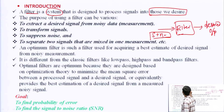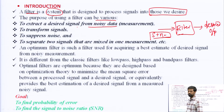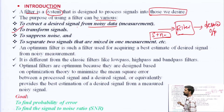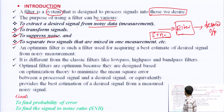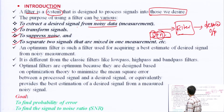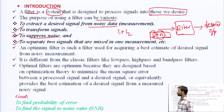The purpose of using a filter can be various: to extract a desired signal from noisy data — that is one of the main roles of the filter — to transform signals, to suppress noise, and to separate two signals that are mixed in one measurement, such as signal plus noise or signal one plus signal two.